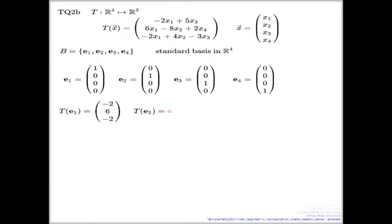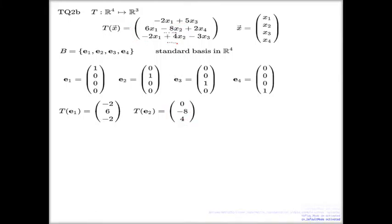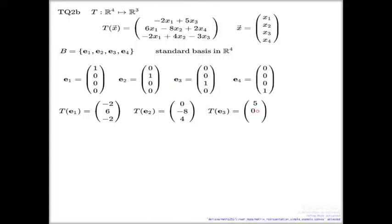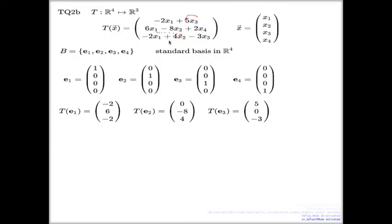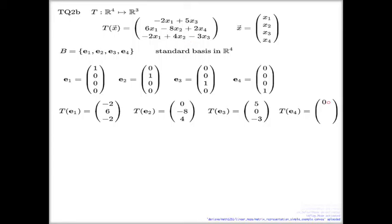I apply T to E2: I use the components of E2 in the explicit formula for T, and that will be (0, −8, 4). For E3, using the components of E3 in the formula gives (5, 0, −3) — there's no x3 in the first line, giving 5, no x3 in the second line, giving 0, and −3. For E4, using E4 across the formula: no x4 in the first line, no x4 in the second line, giving the result (0, 2, 0). So it's as simple as this.